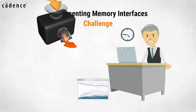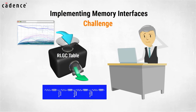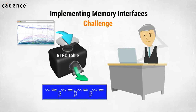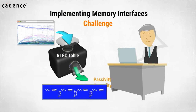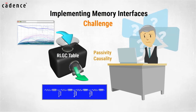To help address this, a conversion process to a simpler broadband SPICE model can be performed. But this conversion often requires modification to the model for passivity and causality, which can leave the SI engineer wondering about the accuracy of their SSN simulation.